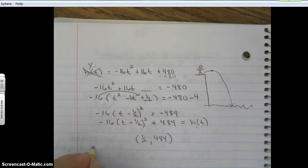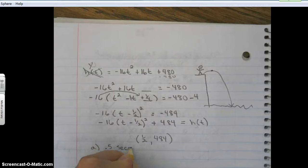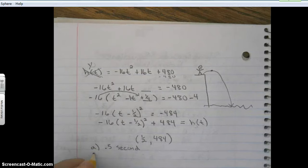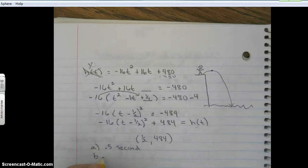So question a asked how long did it take for Jason to reach his maximum height? Well it's going to be a half a second. B, what was the highest point that Jason reached? 484 feet.